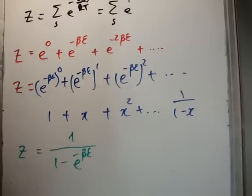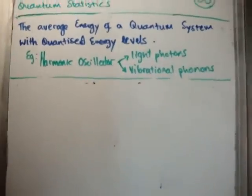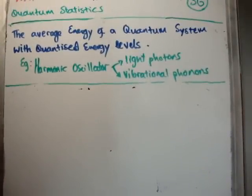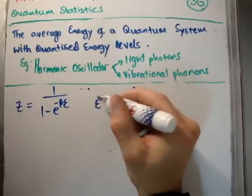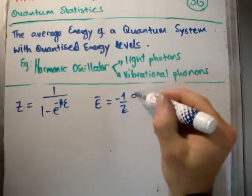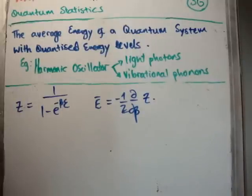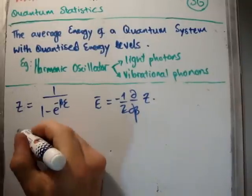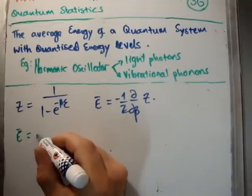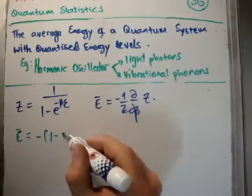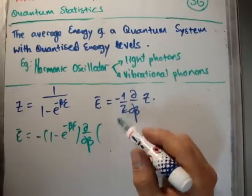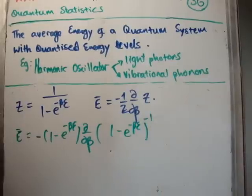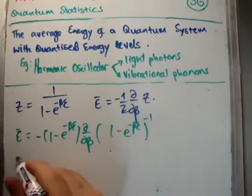That's the hard part done. We now apply the partition function to calculate the average energy of our system, modeled as a linear quantum harmonic oscillator. With Z = 1/(1 - e^(-βε)), the average energy is Ē = -1/Z · ∂Z/∂β. Substituting, we have Ē = -(1 - e^(-βε)) · ∂/∂β [(1 - e^(-βε))^(-1)].